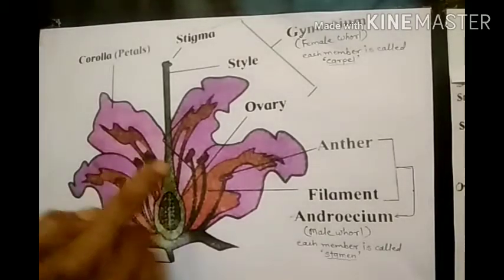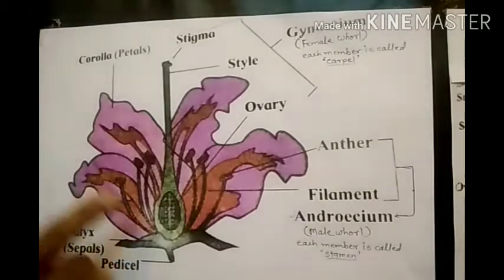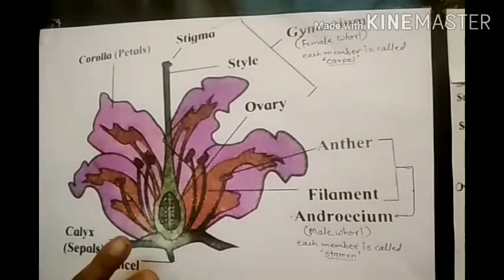First, we will observe the parts of the flower. There are four whorls.